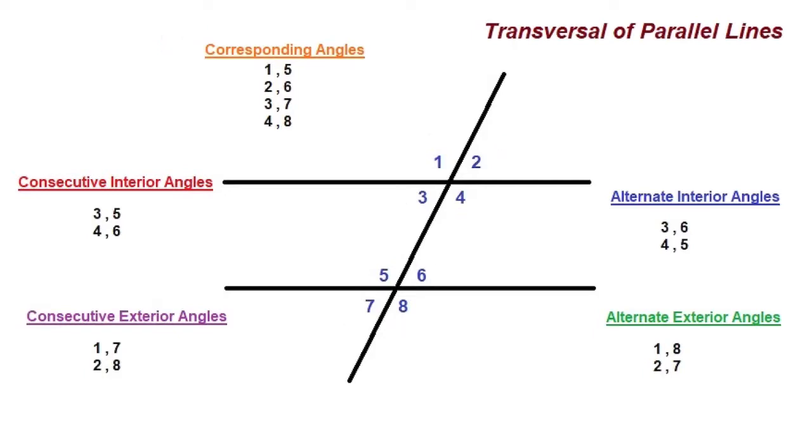Your consecutive interior angles are 3 and 5, and 4 and 6. Your consecutive exterior angles are 1 and 7, 2 and 8, because they're on the outside of the parallel lines.